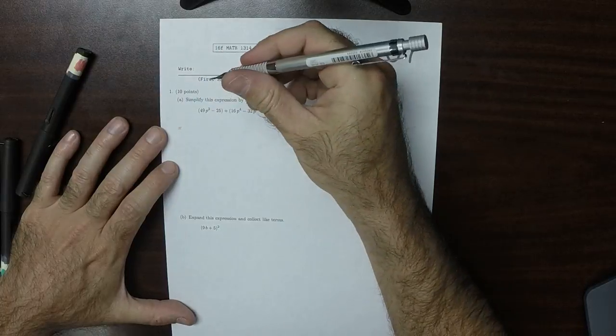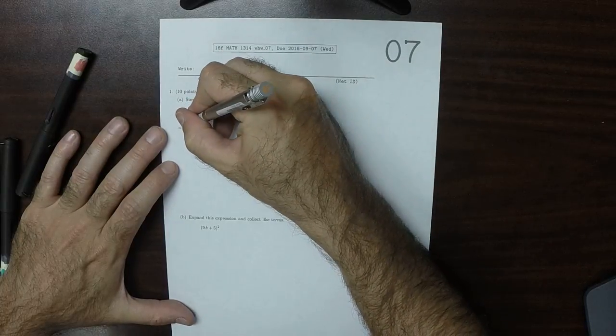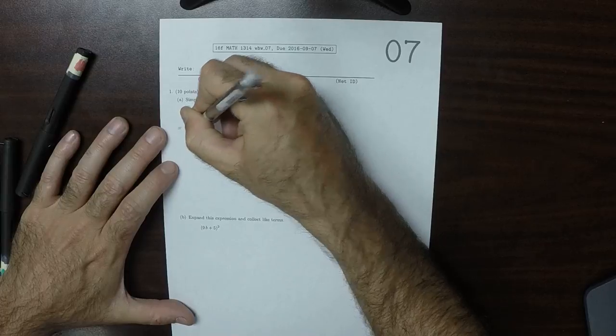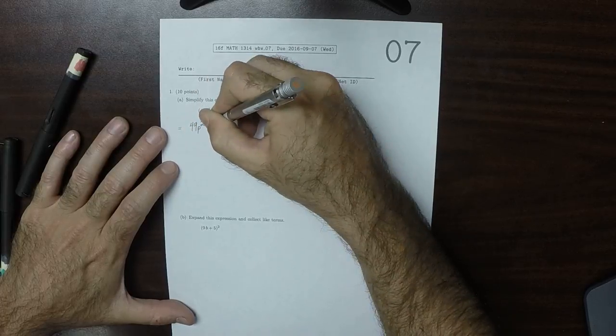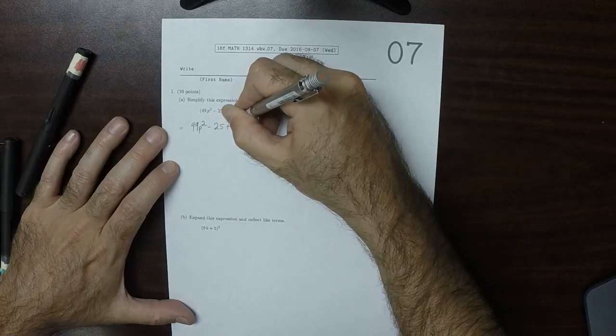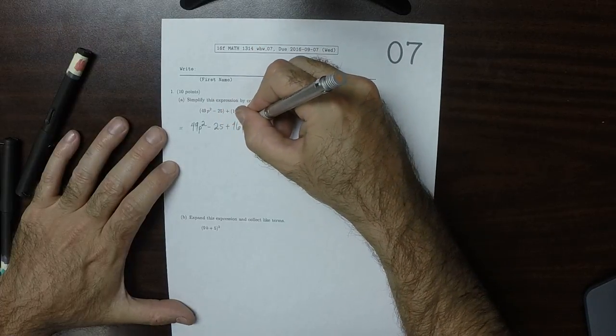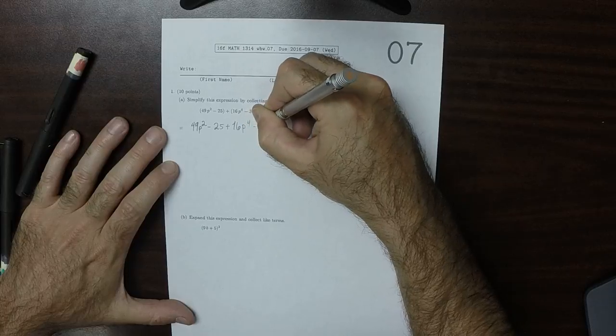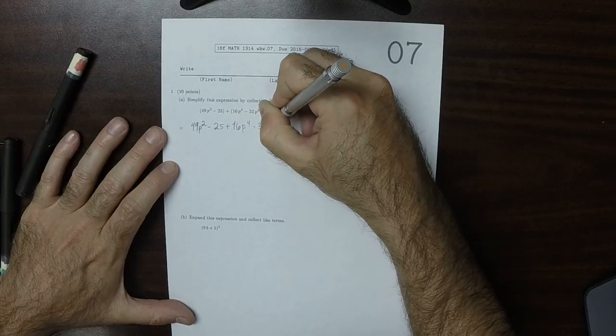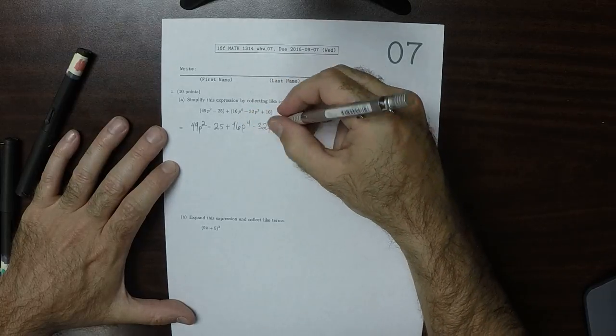So that would be 49p squared minus 25, and then plus 16p to the 4 minus 32p squared and then plus 16.